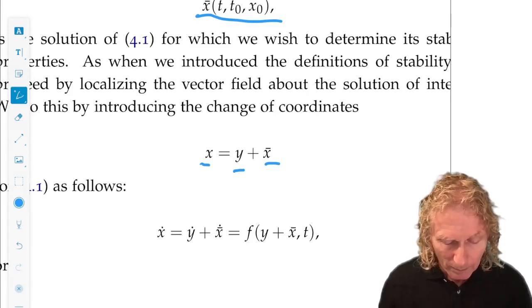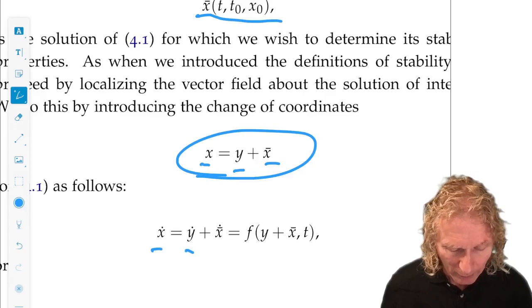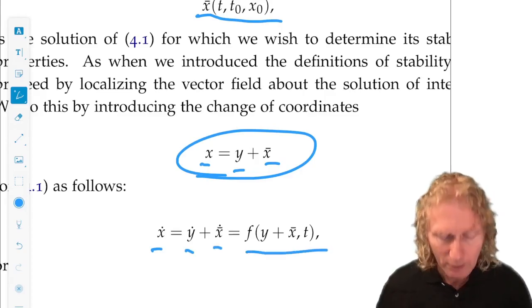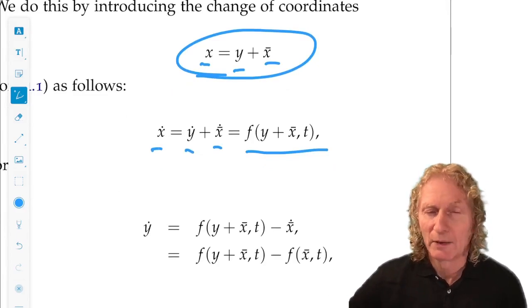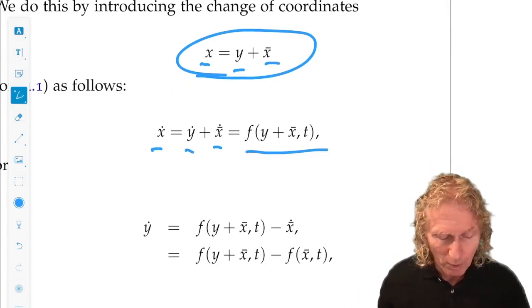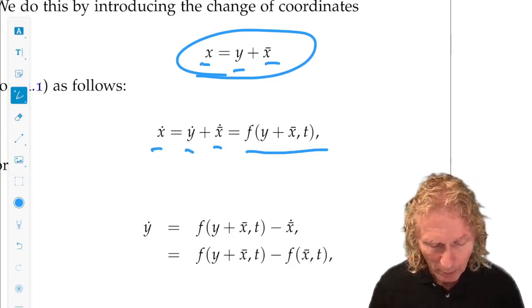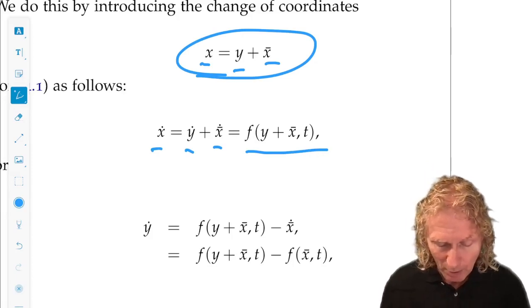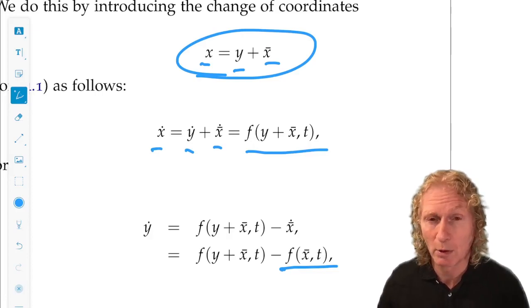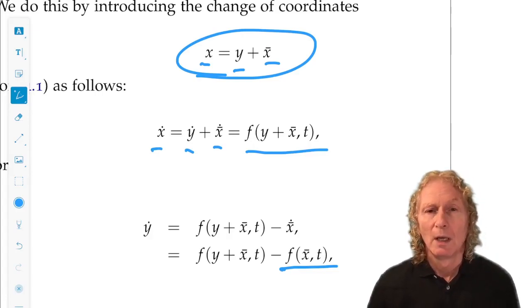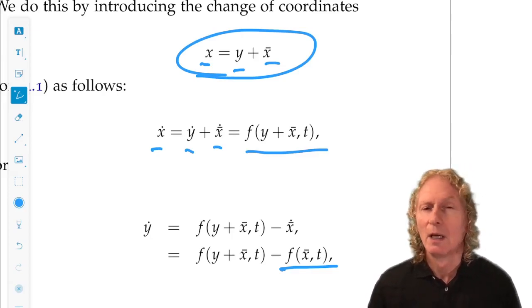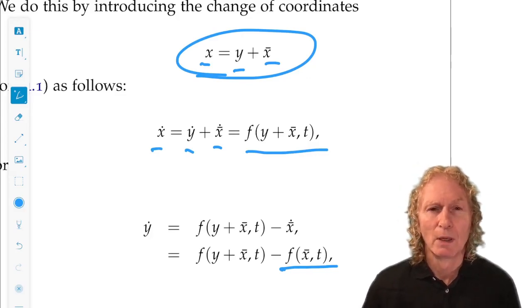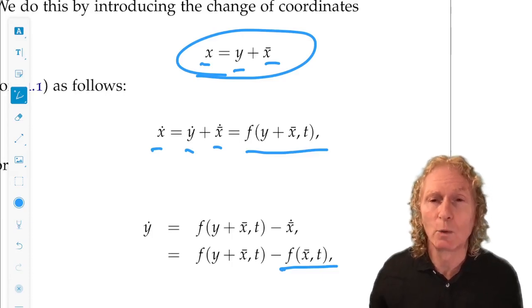So we want to define an ordinary differential equation in Y, just like we did last time. So we differentiate this expression. So X dot is Y dot plus X̄ dot. And we plug that into the ODE. Now, we want to isolate Y by itself. So we put Y dot on the left-hand side. And we have F of Y plus X̄ comma T minus X̄ dot. But X̄ dot is F of X̄ T. X̄ is a solution of the equations. And this is exactly what we did last time. We see that Y equals zero is an equilibrium point of this equation.